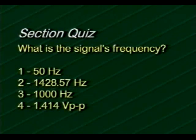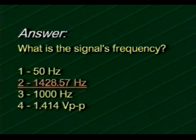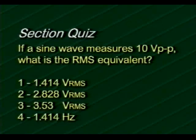What is the signal's frequency from the prior example? The choices are: 50 hertz, 1428.57 hertz, 1000 hertz, or 1.414 volts peak-to-peak. The correct answer is choice two: 1428.57 hertz. Try this one: if a sine wave measures 10 volts peak-to-peak, what is the RMS equivalent?